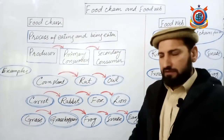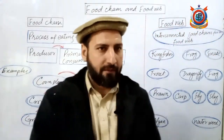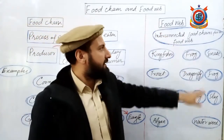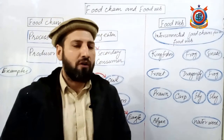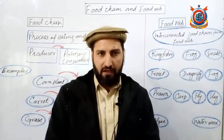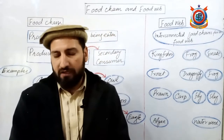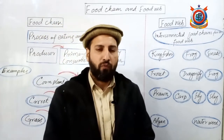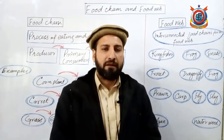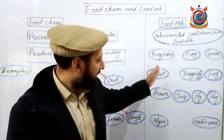Living organisms are connected in a chain form through food relationships - this is the food chain. Now our next topic is food web. We define food web as interconnected food chains. When many food chains combine, a web structure forms. Definition: when interconnected food chains combine, they form a food web.